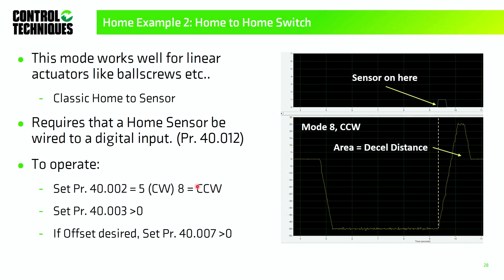That's home to sensor using mode 8, which moves the motor counterclockwise as viewed from the motor face. Mode 5 does the same thing but in the positive direction. If you want an offset, plug it into menu 40 parameter 7. Home in place and home to sensor together cover probably 80% of applications.